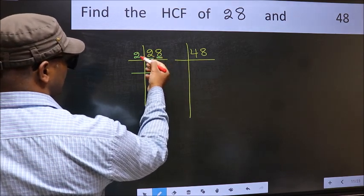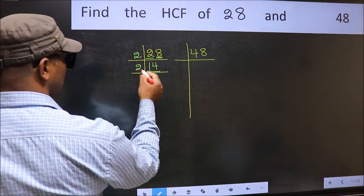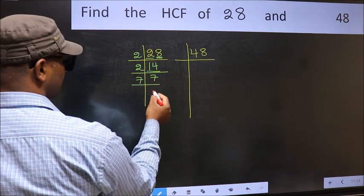Now 14 is 2 times 7 is 14. 7 is a prime number, so 7 times 1 is 7.